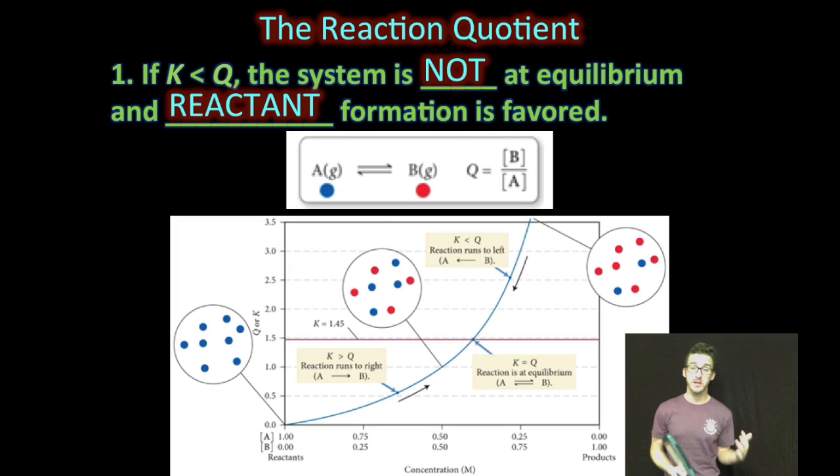Alright, so often what we're going to do then is we're going to be given some concentrations and we're going to ask ourselves, are we at equilibrium or are we not? And if we're not, then what's going to happen in order for us to establish equilibrium? So the next couple of slides, we're going to be comparing that equilibrium constant K to the reaction quotient Q. And there's a really neat trick that will help you out as long as you always compare K to Q in alphabetical order. When you're doing the comparison, always write K first and then Q.